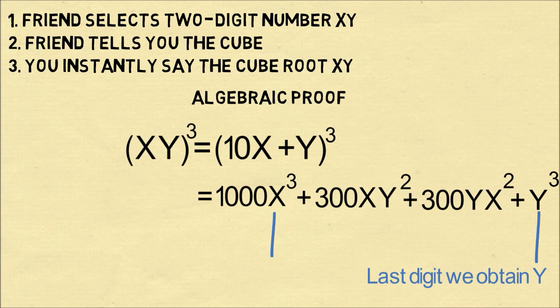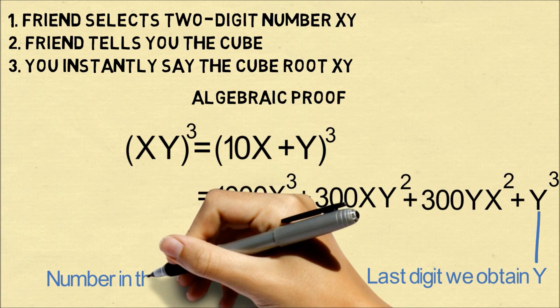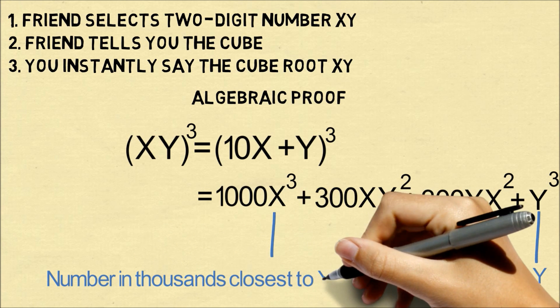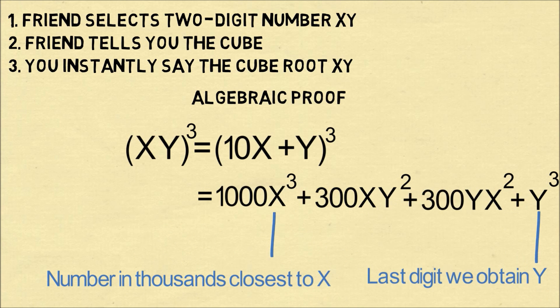And the part where we ignore the last three digits, this comes from the fact that we have 1000x³. So we want to look to whatever the number is closest to x³ in the thousands place.